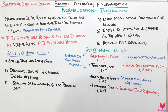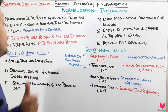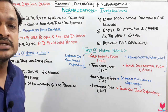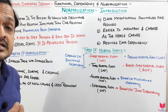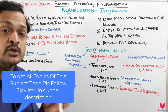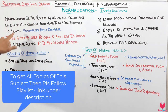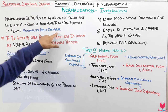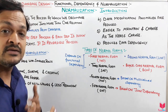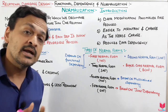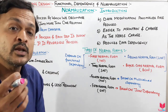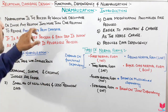Normalization is the process by which we decompose or divide any relation into more than one relation. It is a process of decomposing or dividing our relation into smaller relations — dividing our table into smaller tables to remove anomalies from the database.